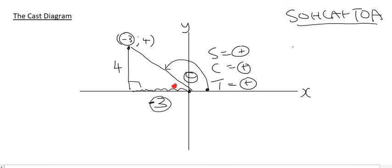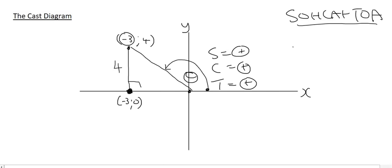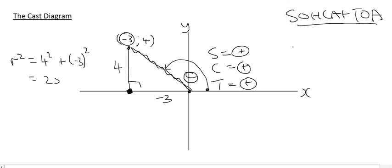Some teachers prefer you write the length as 3, then label the coordinate as (-3, 0) to show the negative. But most teachers will be fine with just using negative 3. So in summary, we'll put a little minus 3 to remind us it's in the negative x direction. Using Pythagoras: r squared equals 4 squared plus (-3) squared, giving 25 on the right-hand side. Taking the square root, that length is 5.